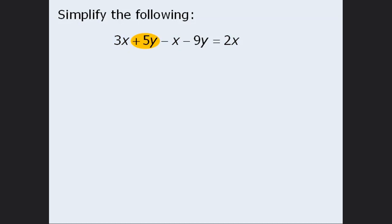Now notice that we have positive 5y and from it we are subtracting 9y, which gives us negative 4y. So we have now simplified the expression on the left hand side to be 2x minus 4y.